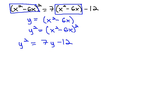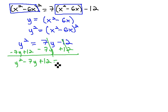We now have an equation we can solve like any other equation by first making the equation equal to 0, by subtracting 7y and adding 12. Now we have y squared minus 7y plus 12 equals 0, and then factoring the equation to y minus 4, y minus 3 equals 0.